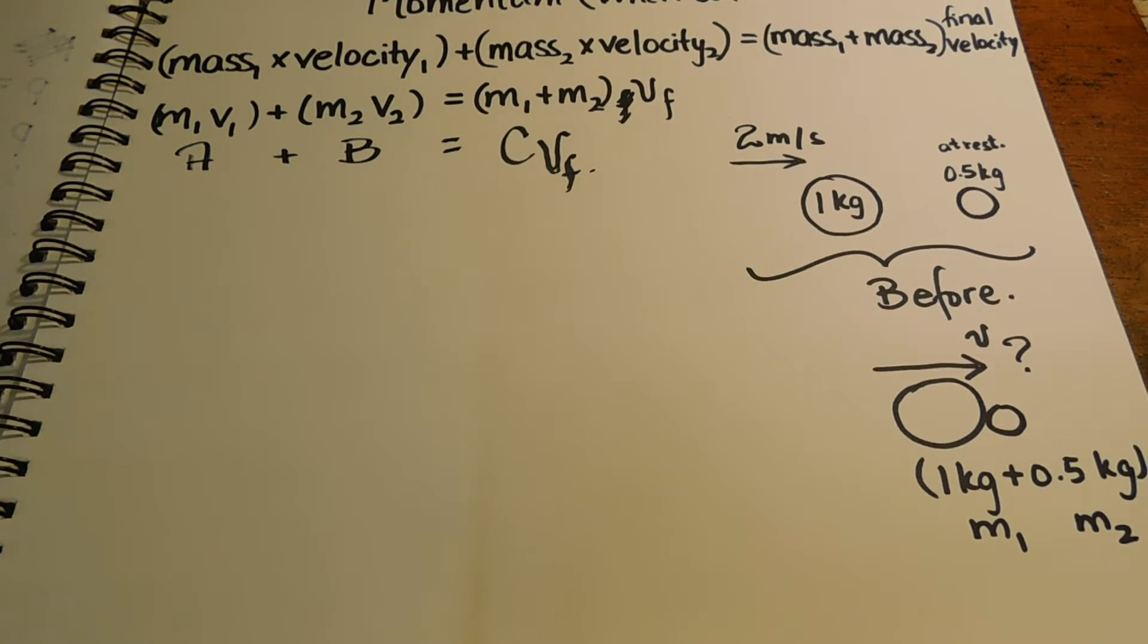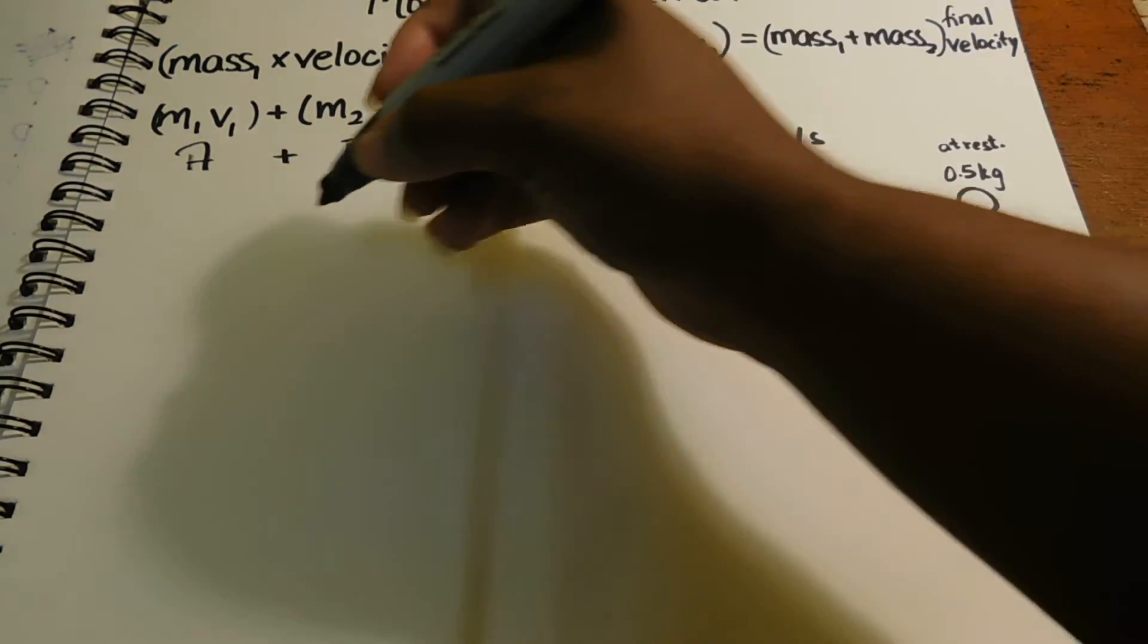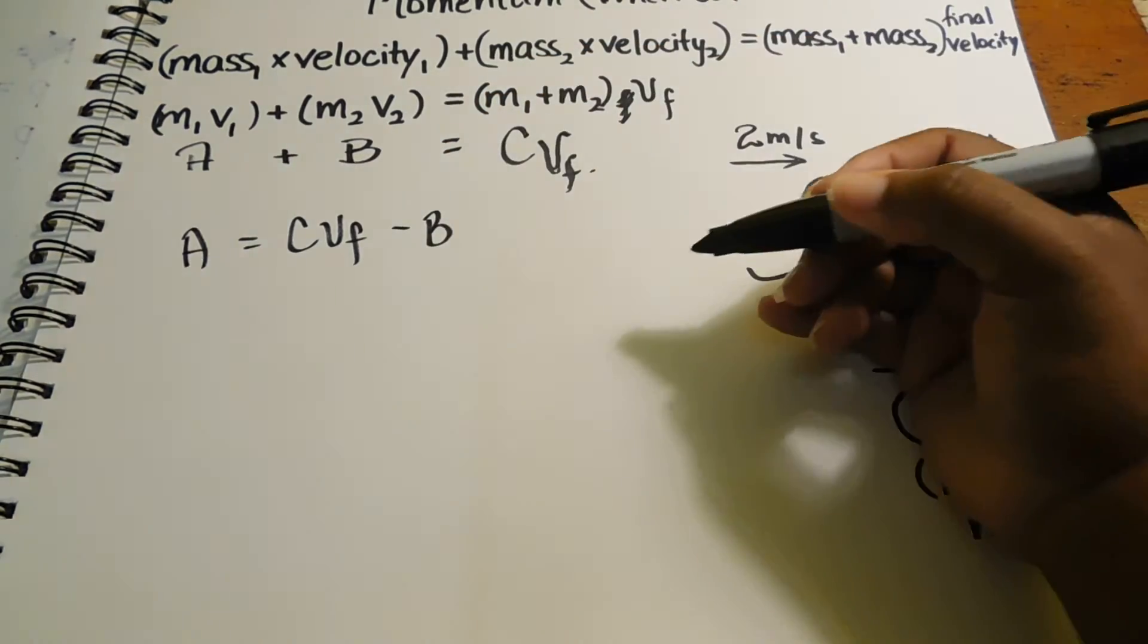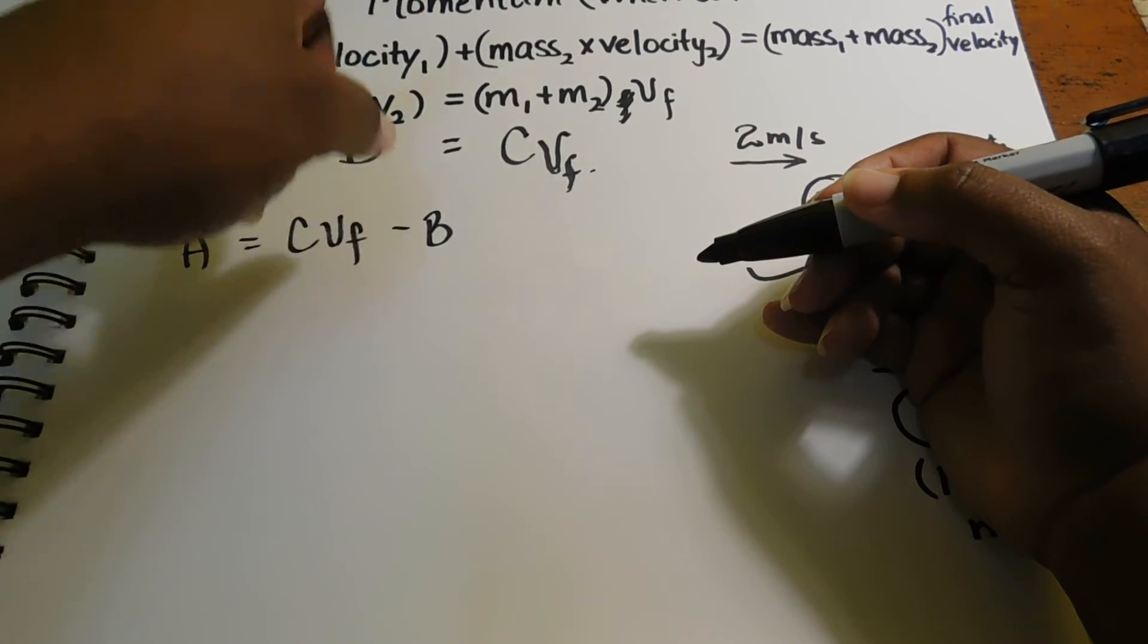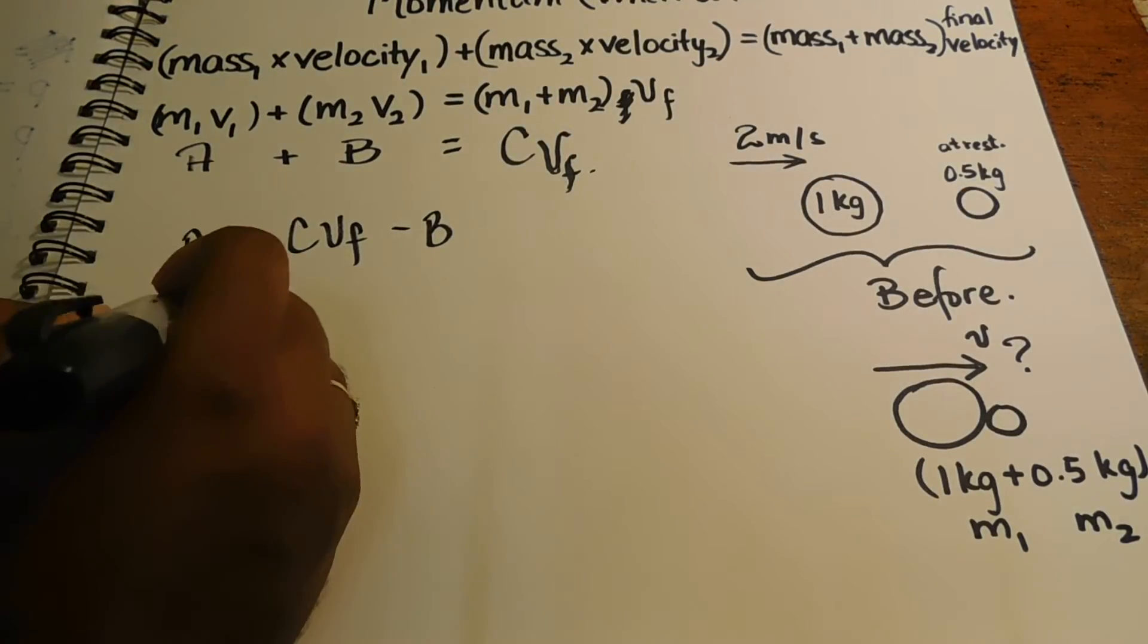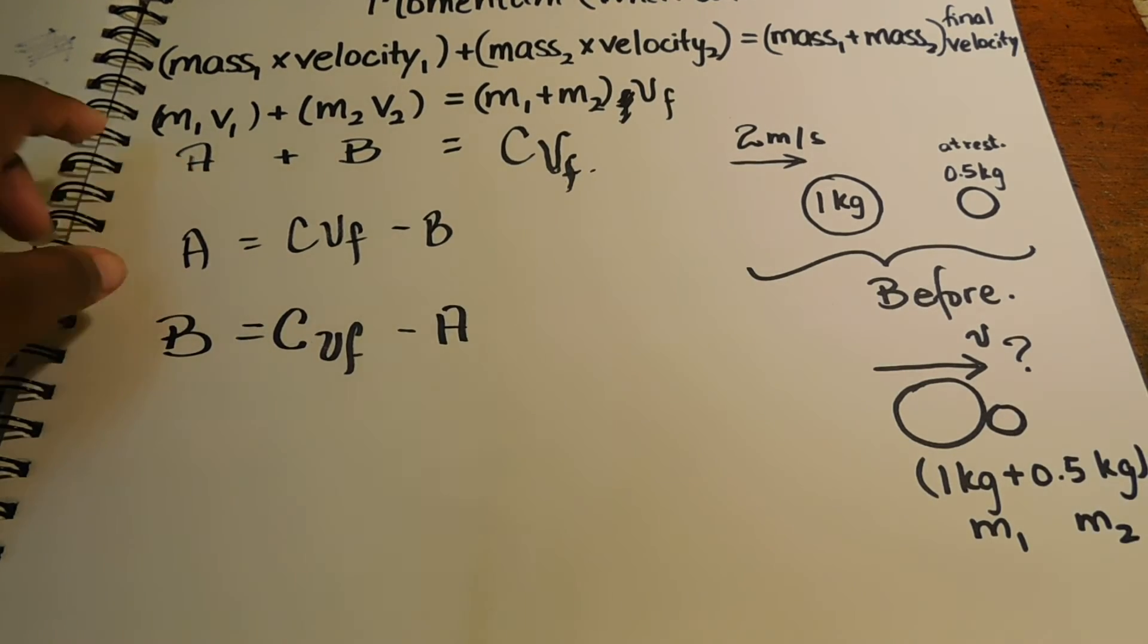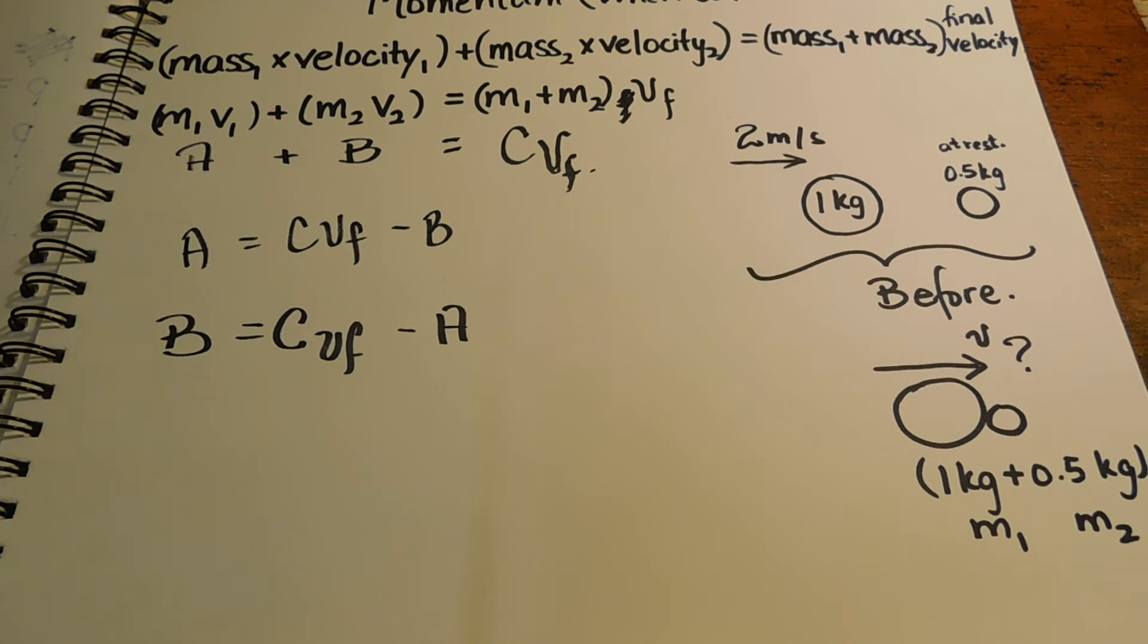Now, if you wanted to solve for A, you would just say A is equal to C VF minus B. Because you have, if you're going to get rid of B on this side, you have to minus B from here and B from here. If you wanted B, you would say C VF minus A because it's positive. So you would minus it from here and minus it from the next side. And pretty much that's it.